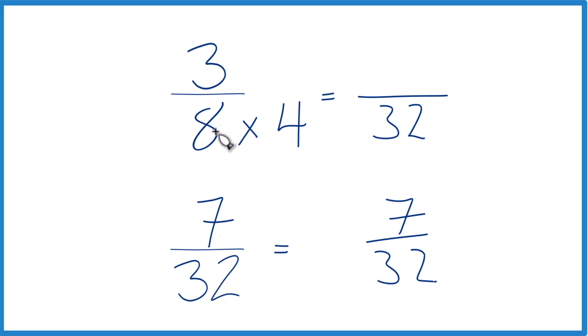And now, because we multiplied the 8, the denominator, by 4, we need to multiply the numerator by 4 as well. Because 4 over 4, that's just 1. So we're just changing the way it's represented. 3 times 4 is 12. And now,